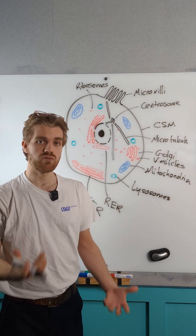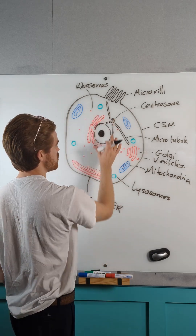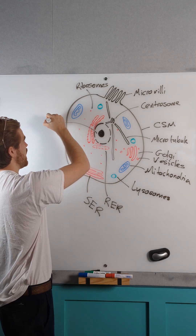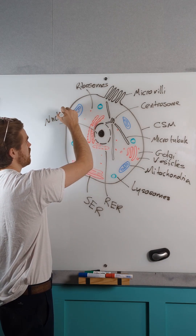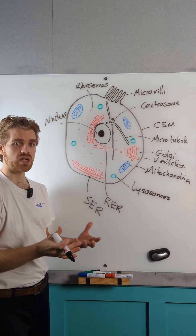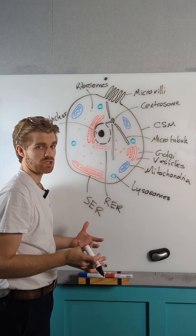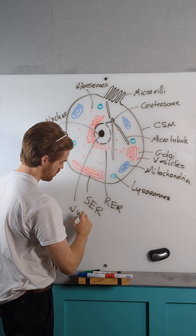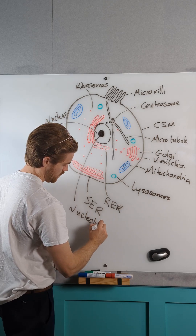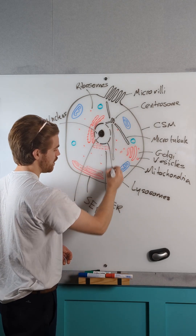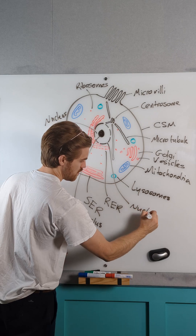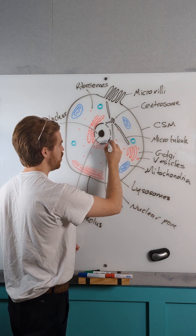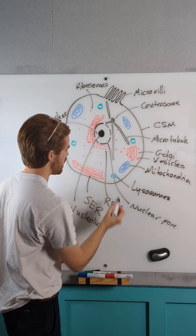Along with our free floating ribosomes, we've now got to our nucleus. So the total structure here we have our nucleus and then we can start to break down our specific parts of the nucleus. In the centre we have our nucleolus, we've got our nuclear pores, and alongside our nuclear pore we also have our nuclear membrane.